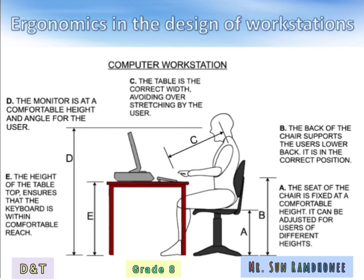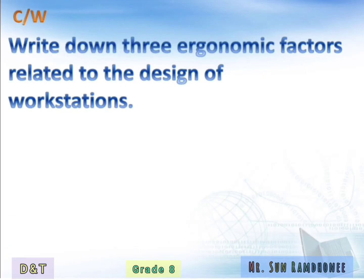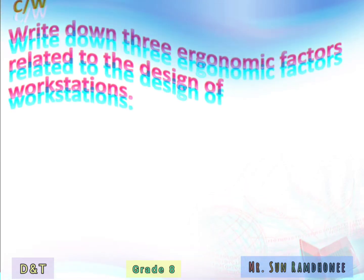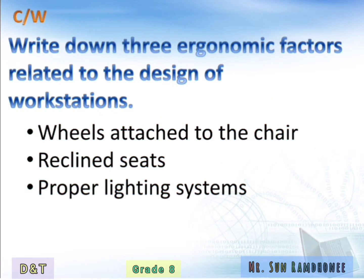For example, the natural movement of the arms has to be respected, therefore the keyboard must be placed at a certain distance from the elbows. We can see that wheels have been attached to the chair which facilitates movement. It has reclined seats, meaning the person can lean easily on the chair. There are proper lighting systems so the person doesn't have to put much effort into reading or writing or any tasks being carried out.